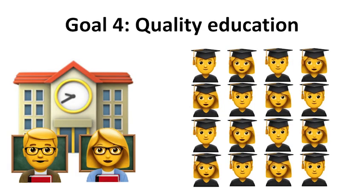Sustainable development goal 4 is to ensure inclusive and equitable quality education and promote lifelong learning opportunities for all. The United Nations has defined 10 targets for this goal. Seven of the 10 targets are outcome orientated. They are free primary and secondary education, equal access to quality pre-primary education, and affordable technical, vocational and higher education.